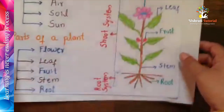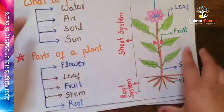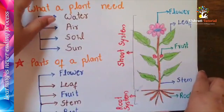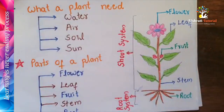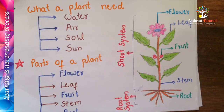So, what does a plant need? A plant needs four basic things: water, air, soil, and sun. These four basic needs are essential for a plant to grow.